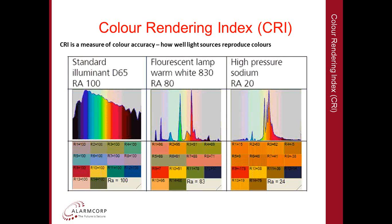Finally, the same color chart illuminated with a high pressure sodium lamp — which has a peak output in the orange to red spectrum — shows that other than the blue and red colors, virtually everything else appears a shade of yellow. This highlights again that a light with a low color rendering index is a very poor choice for CCTV if color accuracy is important in the application.